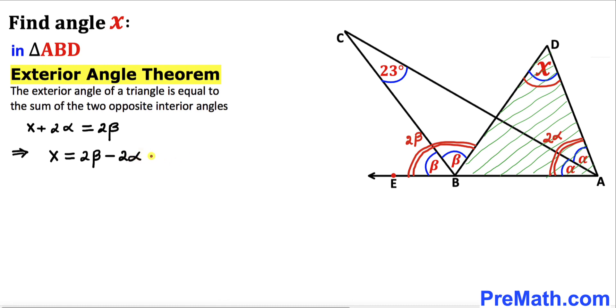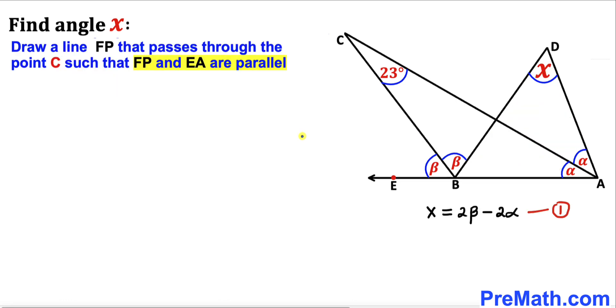Let me call this our equation number one. Here's our next step. Let's draw a line that passes through point C. In this next diagram, line FP passes through point C and it is parallel to line EA as well.